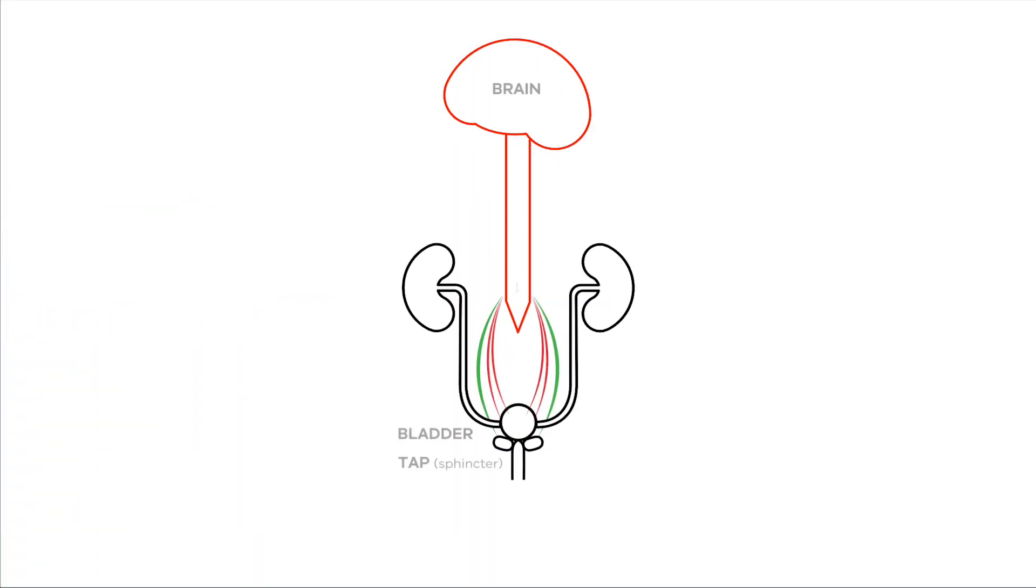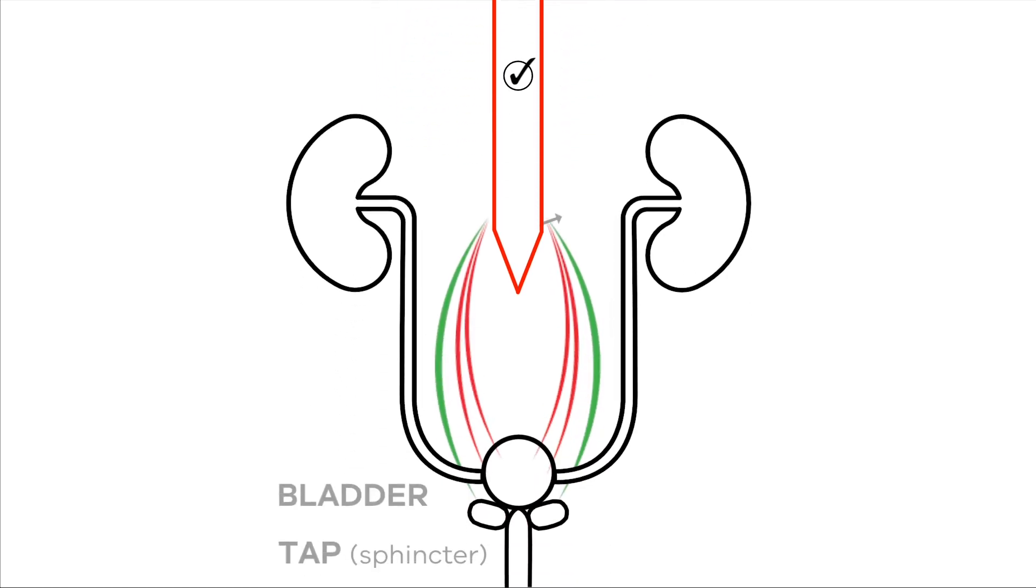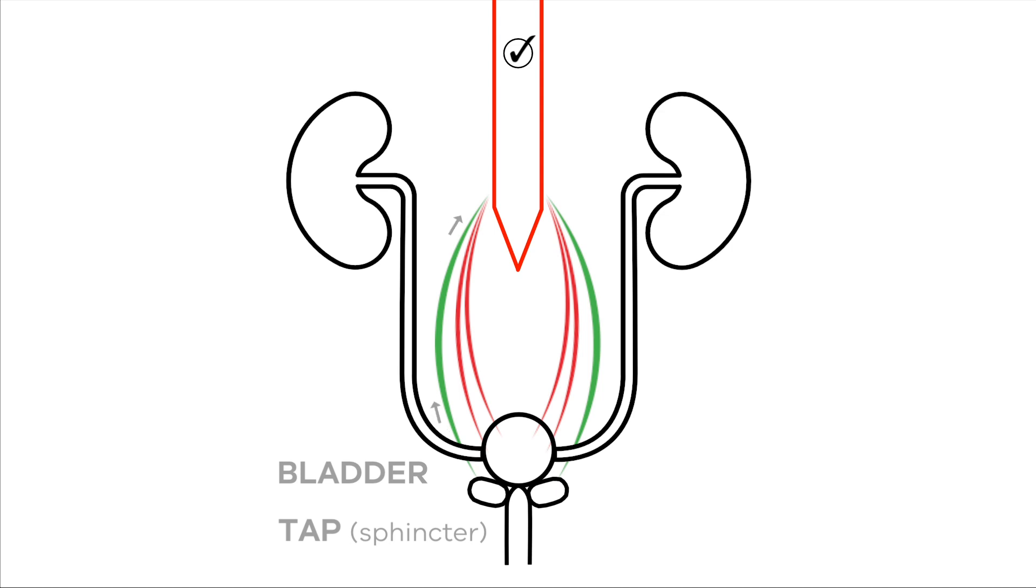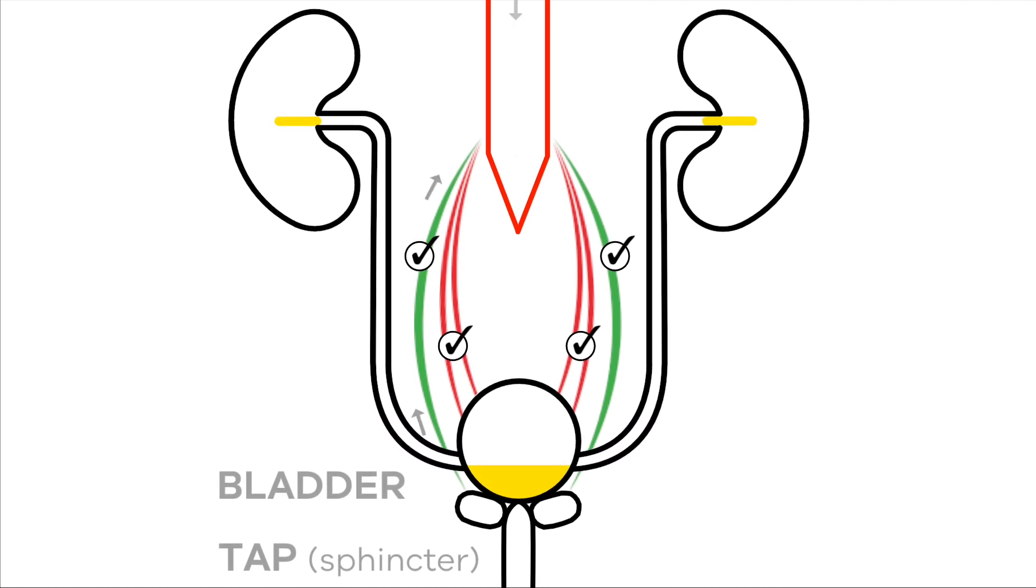With a normally functioning bladder, the brain coordinates the filling and emptying. Messages flow between the spine and the bladder through the automatic nerves, getting the bladder ready to fill. The automatic nerves can work without being connected to the brain. The voluntary nerves only work when connected to the brain.